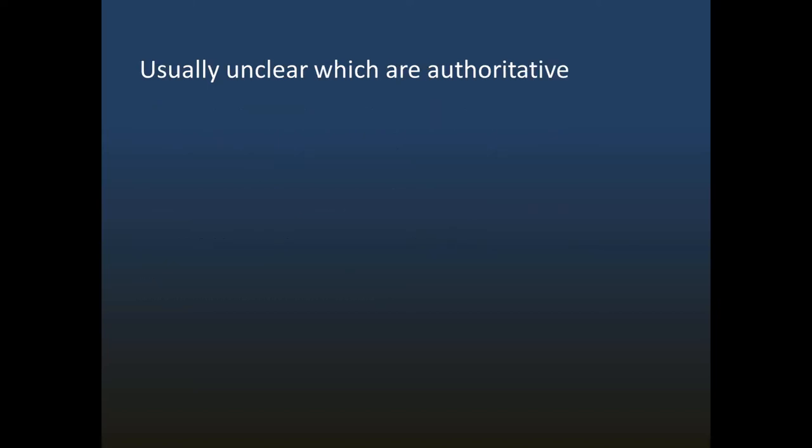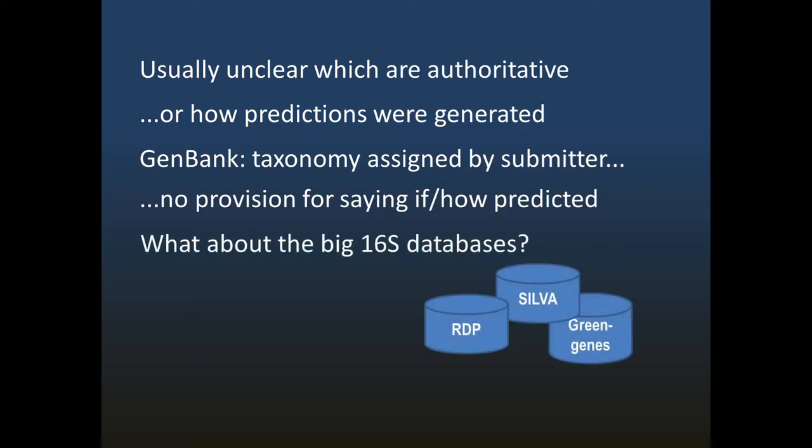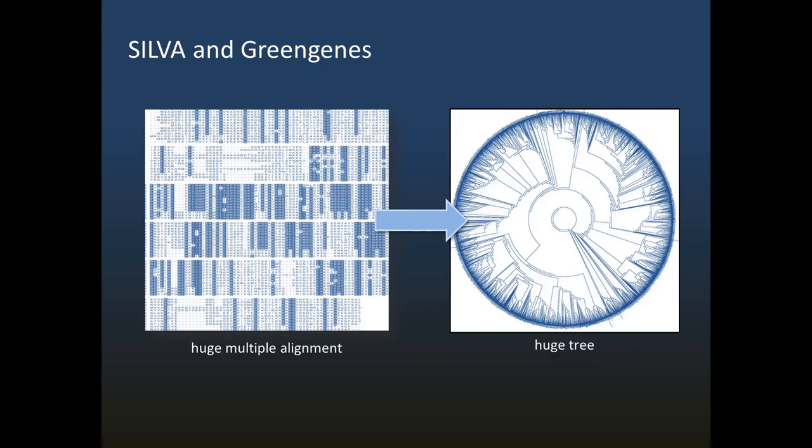Now we get into a big mess. In most databases, it's not documented which annotations are authoritative, or how the predictions were generated. GenBank is a typical example. Taxonomy identifiers are assigned by the submitter, and there's no provision in the database for noting if or how a prediction was generated. What about the big 16S databases? SILVA and Greengenes use similar approaches for predicting taxonomy of environmental sequences. They construct a multiple alignment of all the sequences and use that alignment to make a tree. There are more than a million sequences in these databases, so the alignments and trees are huge.